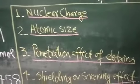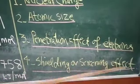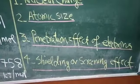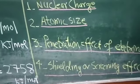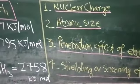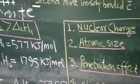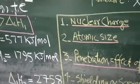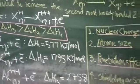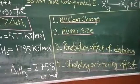Now coming to another important effect known as the shielding effect. It has two names: shielding or screening effect. As the shielding effect of the electrons increases, the ionization enthalpy decreases.